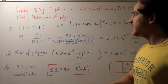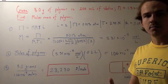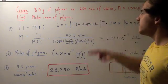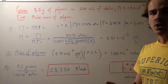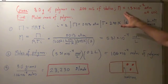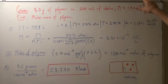In this example, we are given 3 grams of some polymer dissolved in 20 milliliters of solution. And we know that the osmotic pressure is 1.3 times 10 to the negative 2 atm at 25 degrees Celsius.